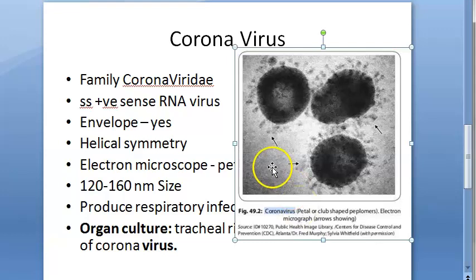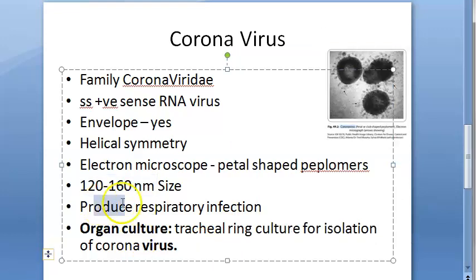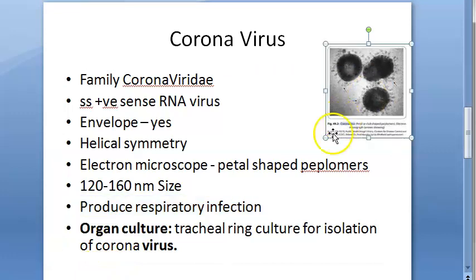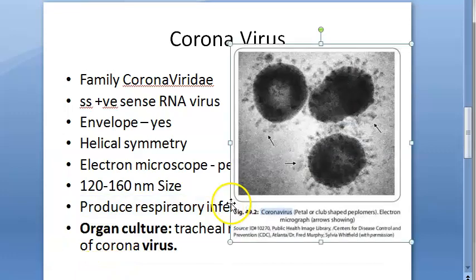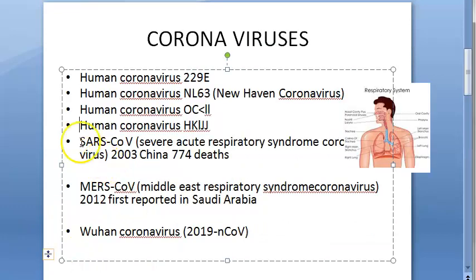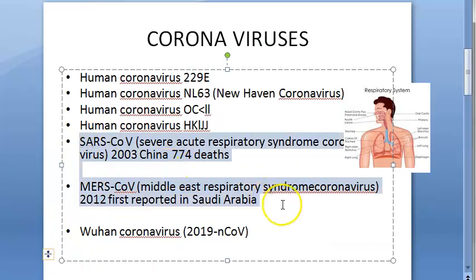So petal or club-shaped peplomers — these produce respiratory infection. These peplomers can also be called crown-shaped peplomers, giving an appearance like the solar corona. Hence, they are called coronavirus. There can be man-to-man transmission of coronavirus.